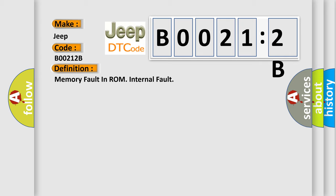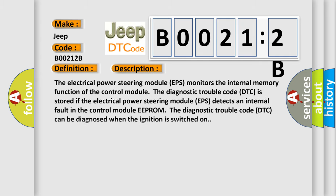And now this is a short description of this DTC code. The electrical power steering module EPS monitors the internal memory function of the control module. The diagnostic trouble code DTC is stored if the electrical power steering module EPS detects an internal fault in the control module EEPROM. The diagnostic trouble code DTC can be diagnosed when the ignition is switched on.